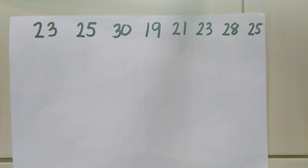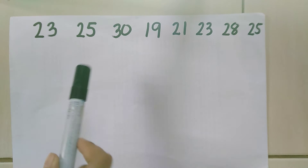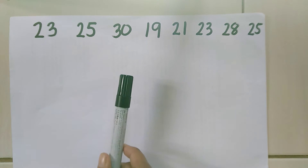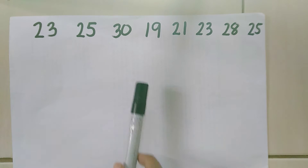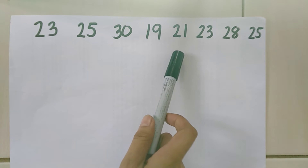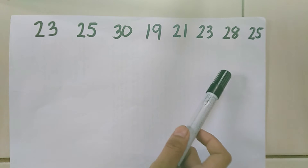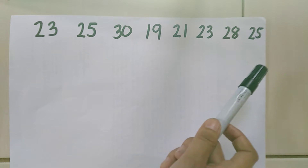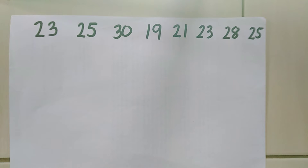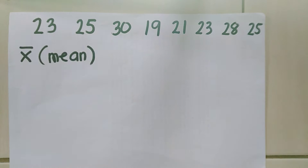We have 23, 25, 30, 19, 21, 23, 28, and 25. We are going to solve first the mean.